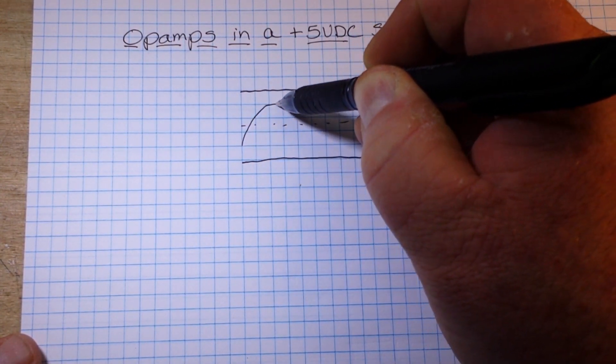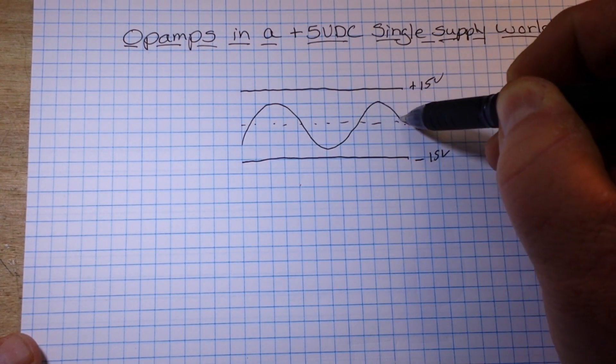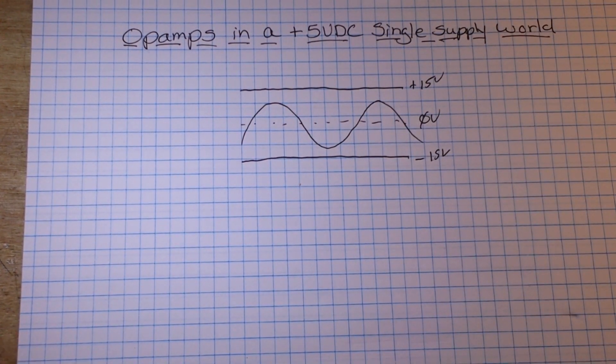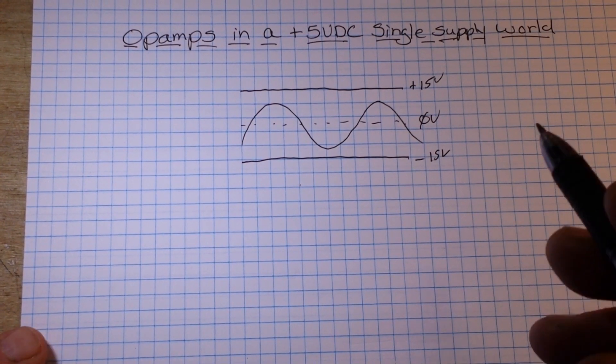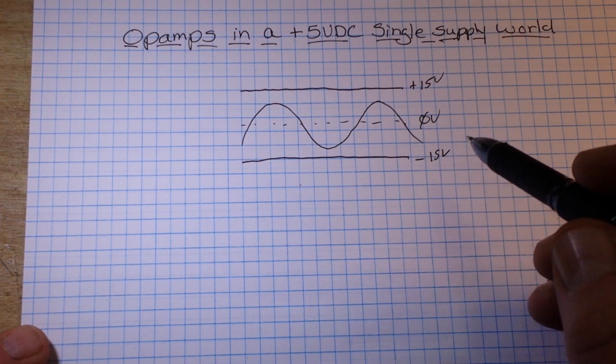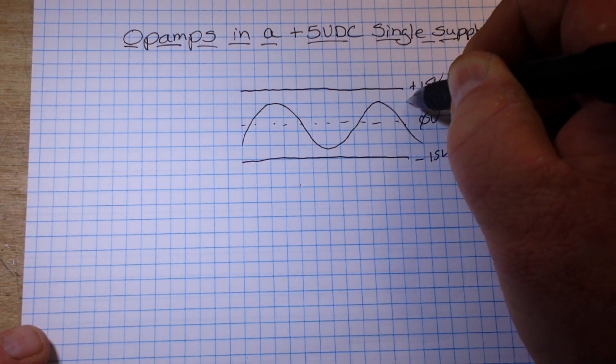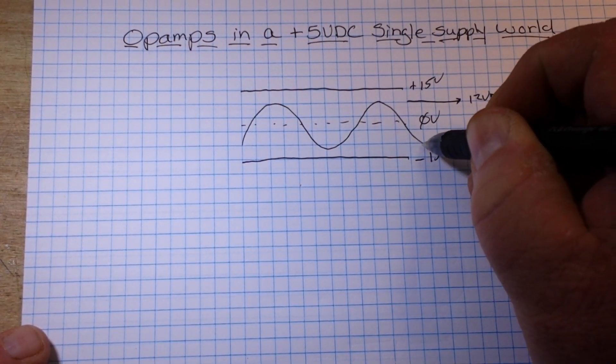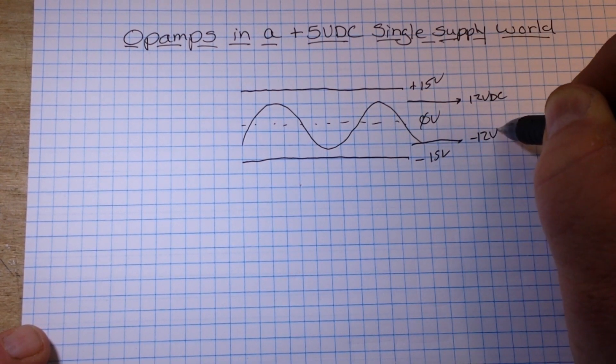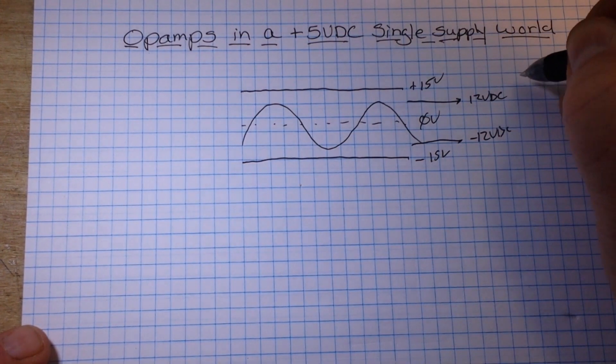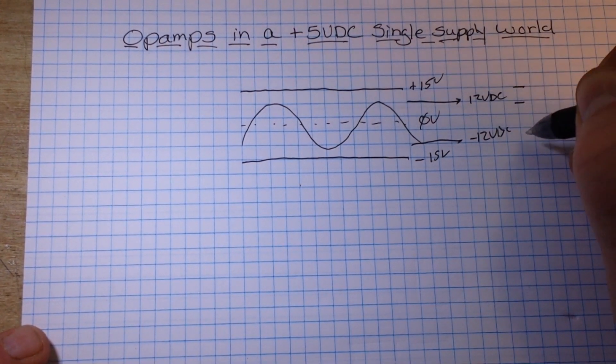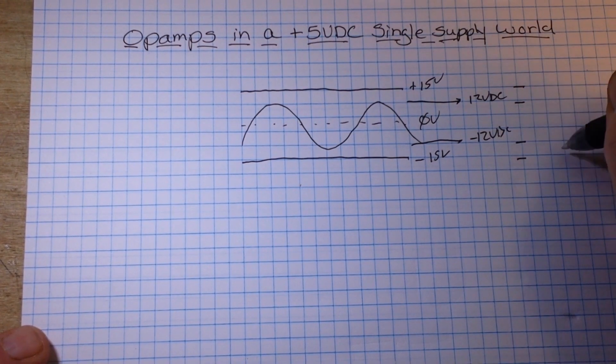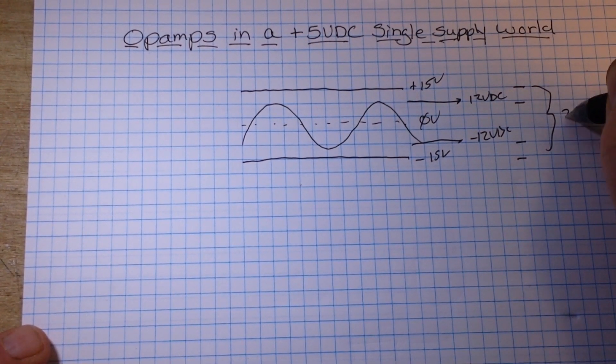Say we had just a simple sine wave that we were amplifying using say like an LM 741 with an inverting amplifier configuration, the most basic thing you can do with an op amp. What you would notice here are a couple of things: this line here was about 12 volts DC and this line here was about minus 12 volts DC.